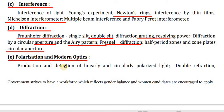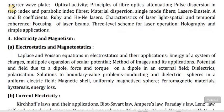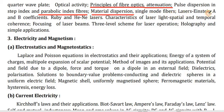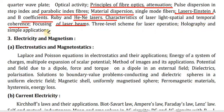Section E — Polarization and Modern Optics: production and detection of linearly and circularly polarized light, double refraction, quarter-wave plate, optical activity, principles of fiber optics, attenuation, pulse dispersion in step-index and parabolic-index fibers, material dispersion, single-mode fibers, Einstein A and B coefficients, Ruby and He-Ne lasers, characteristics of laser light, spatial and temporal coherence, focusing of laser beams, three-level scheme for laser operation, holography and simple applications.